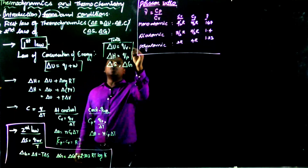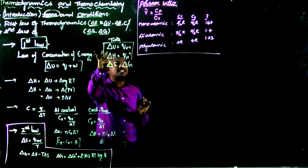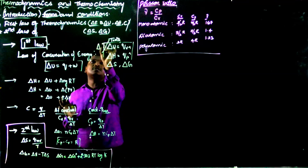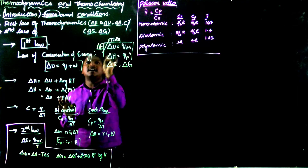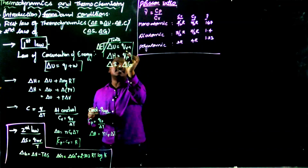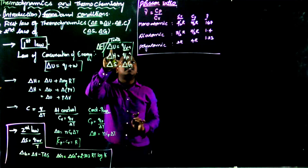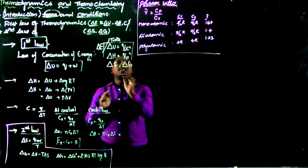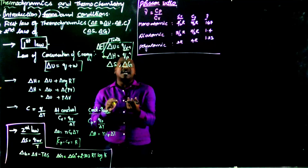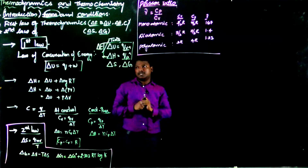In the First Law of Thermodynamics, the two main tools we use are internal energy and enthalpy. Internal energy is written as ΔU — in some textbooks it is given as ΔE — and it is measured at constant volume, represented as qv. ΔH is called enthalpy or heat content, measured at constant pressure. These are the two key tools.